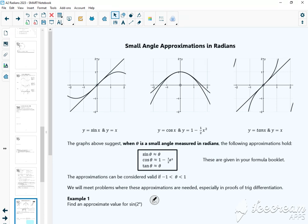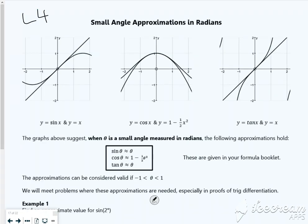Hi everybody, so this is lesson 4 within the radians pack. It's the last lesson. It's quite a nice little lesson really. It's all about small angle approximations.